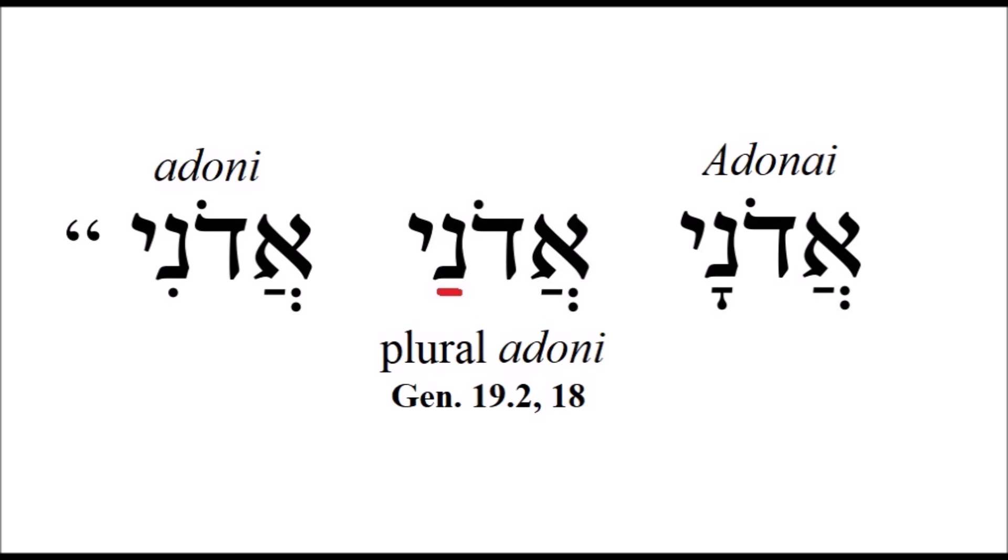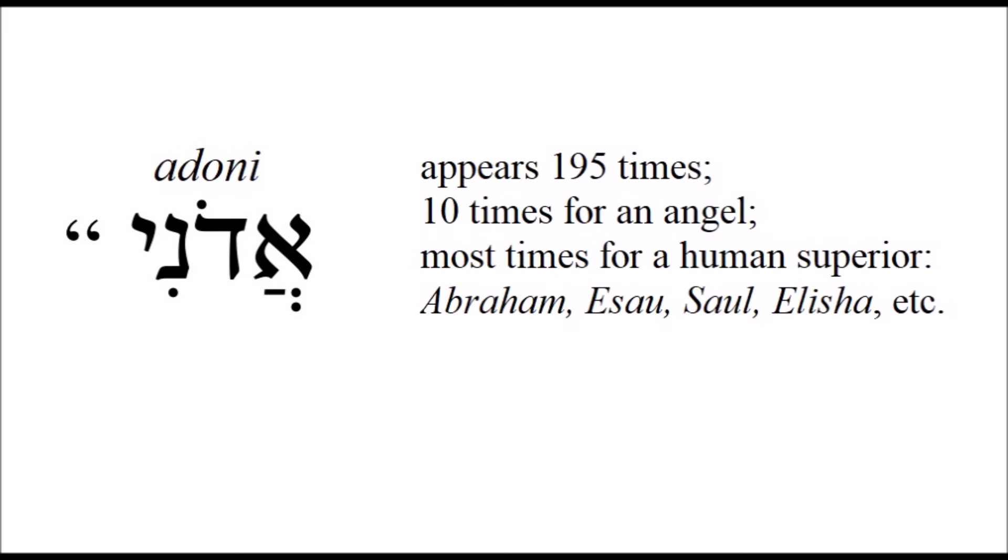The third word is Adoni — note the pronunciation carefully: Adoni — and this means lowercase L, Lord, singular, and not capital L-O-R-D. That is, it refers to a non-deity superior. The Jews desired that we understand who is God and who is not. This word Adoni occurs 195 times in the Hebrew Bible, and in ten of those occasions it refers to a single angel. In all the rest of the 195 occurrences, a human superior is described — this could be Abraham, could be Esau, could be Saul, or Elisha, even a husband, and very often 'my lord the king.' Note the pronunciation Adoni: the dot under that last N makes the sound of E.